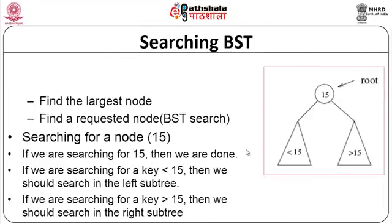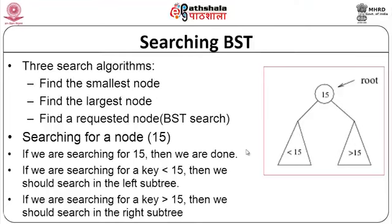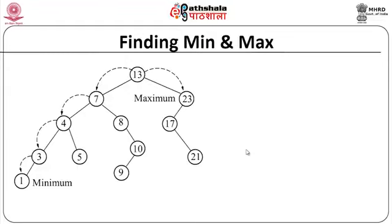There are three search algorithms: finding the smallest node, finding the largest node, and finding a particular requested node. When searching for a key — say 15 — if it is the root, we are done. If the key is less than 15, search only the left subtree. If greater, search only the right subtree. This is why it is called binary search — each comparison eliminates one half of the tree.